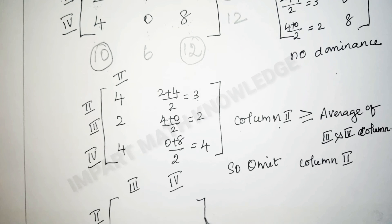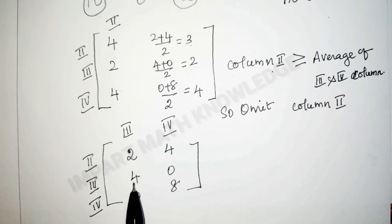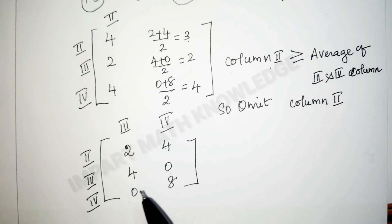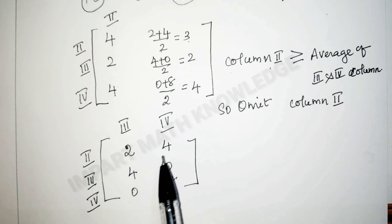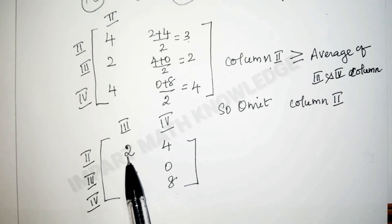The reduced matrix is now: row 2 — 2, 4; row 3 — 4, 0; row 4 — 0, 8. Check for dominance: compare the first row with other rows — 2 is less than 4, but 4 is greater than 0, so no dominance; 2 is greater than 0, so no dominance. Check column wise: 4 is greater than 2, but 0 is less than 4 — no dominance.